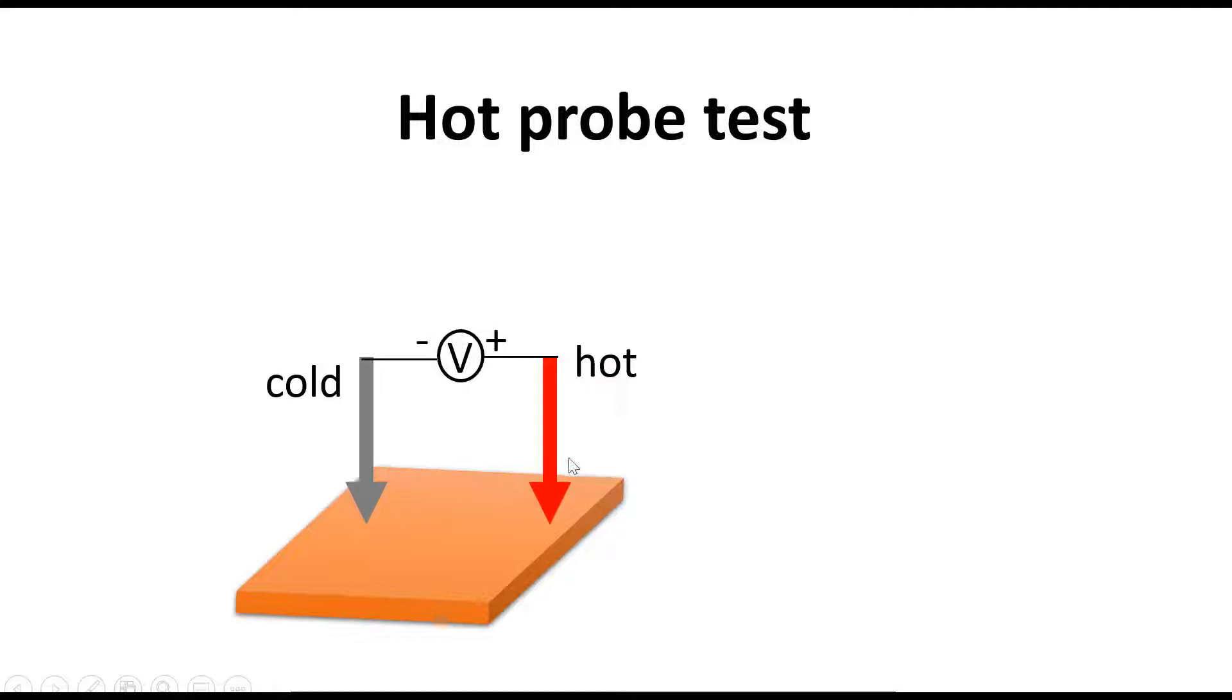If your thin film is N-type, the voltmeter reading will be positive. The positive terminal should be heated up. If you heat up the positive terminal of the voltmeter and it shows a positive voltage, then this is an N-type film. If it's P-type, it will show a negative voltage output.